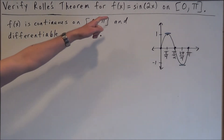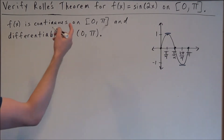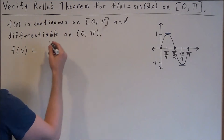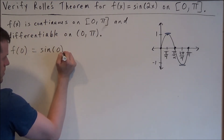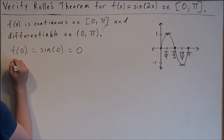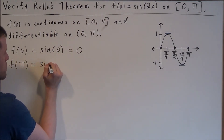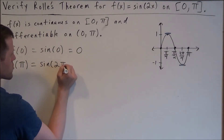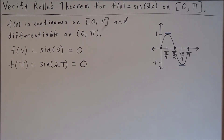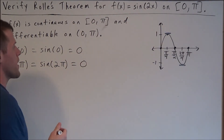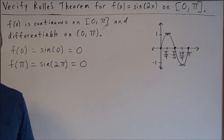Next we show the function is equal at its endpoints. Plugging in 0 gives sin(0) = 0, and plugging in pi gives sin(2pi) = 0. Since the three conditions are met — continuous on the closed interval, differentiable on the open interval, and equal at the endpoints — the conclusion of Rolle's theorem must apply here.